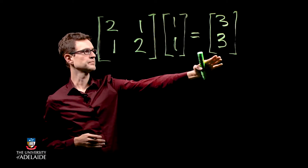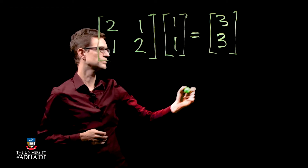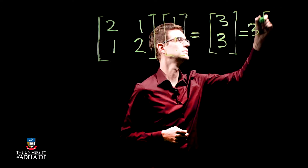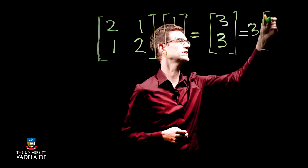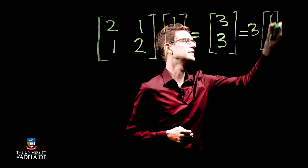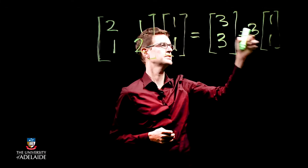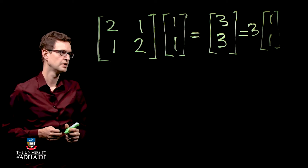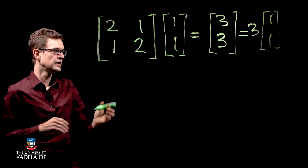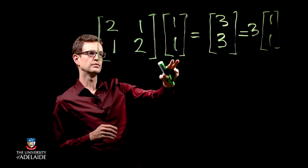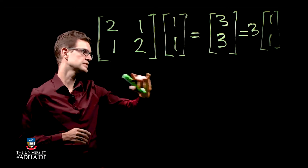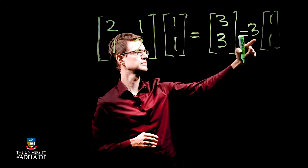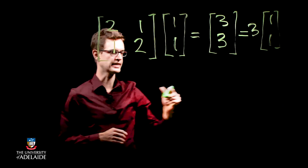Now notice something interesting — I've got three and three, so I can write this in a slightly simpler form: three times the vector [1, 1]. So I've got a vector which, when I multiply it by a matrix, I end up with the same vector I started with times some number, which is three in this case.